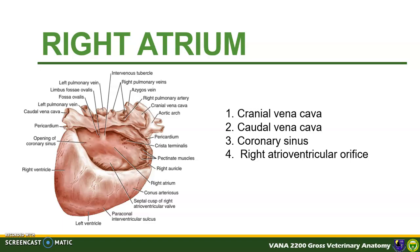The right atrium has the following openings: the cranial and caudal vena cavae, where blood from the systemic circulation enters the heart; the coronary sinus, where the coronary arteries supply blood to the heart itself; and the right atrioventricular orifice, where blood exits the right atrium to enter the right ventricle.